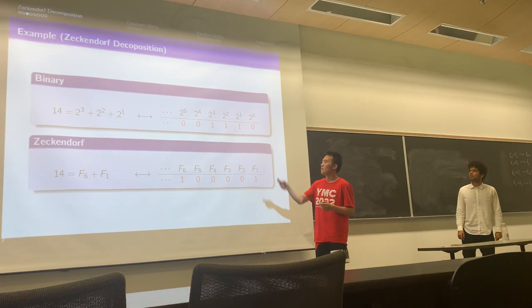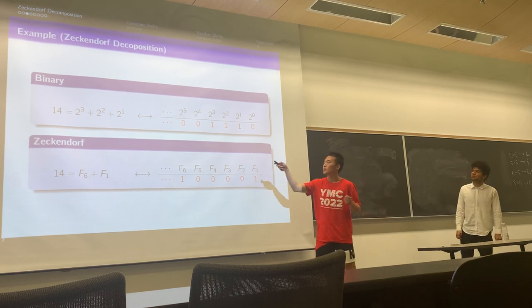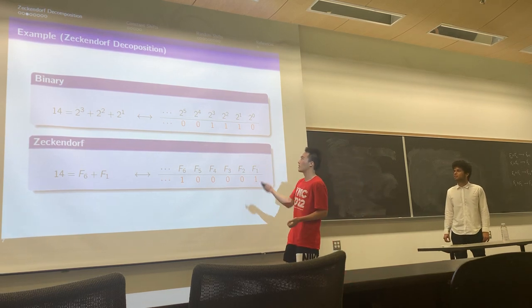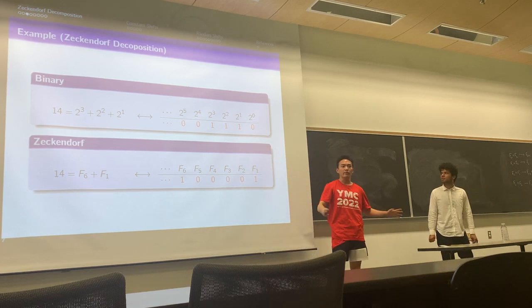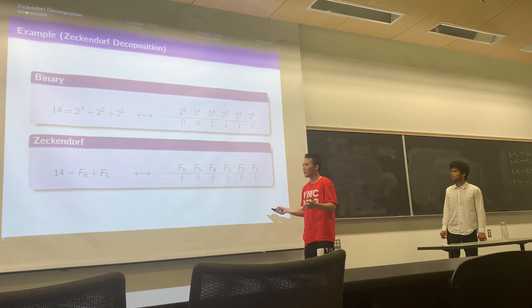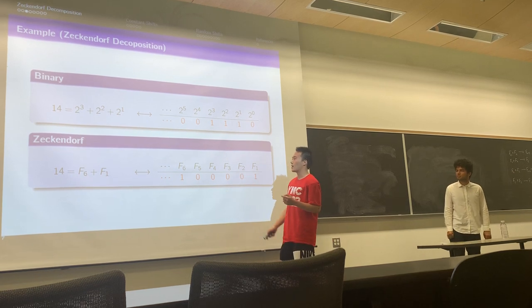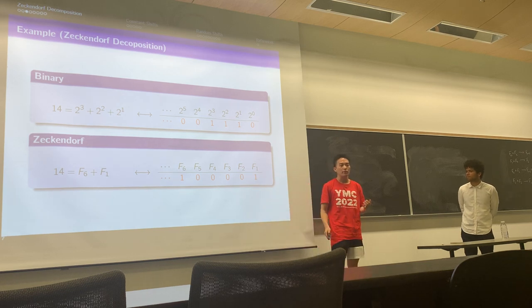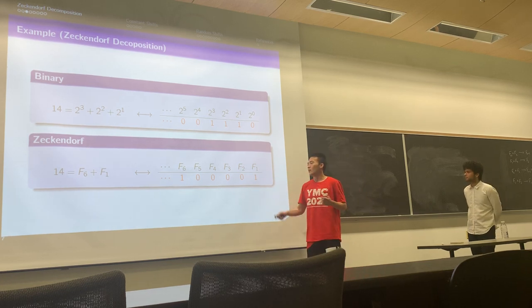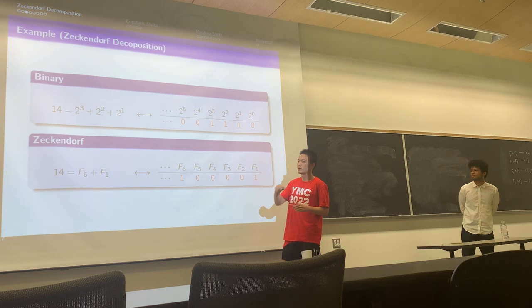For binary decomposition of 14, we write it as 2³ + 2² + 2, and you have three ones in the decomposition, it's a string of zeros and ones well defined. For the Zeckendorf decomposition, we write it as F₆ + F₄, which means the sixth Fibonacci number and the fourth Fibonacci number. You have two ones in the decomposition and zero elsewhere.